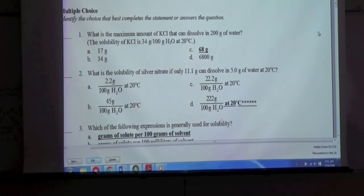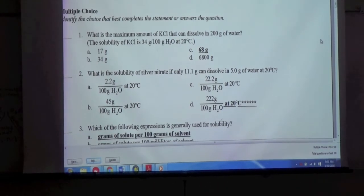What is the solubility of silver nitrate if only 11.1 grams can dissolve in 5.0 grams of water at 20 degrees Celsius? D, 220 grams over 100 grams at 20 degrees Celsius.